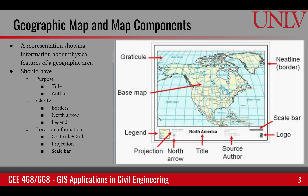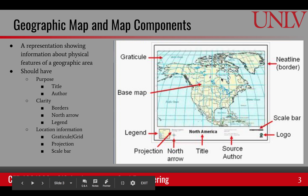Let's talk about geographic maps and map components first. A map is a representation showing information about physical features of a geographic area. For example, this map shows the land boundary of the North American continent. A map should have certain things. First, a purpose, which is shown by the title, and the author's name — the person who prepared the map — should always be there.